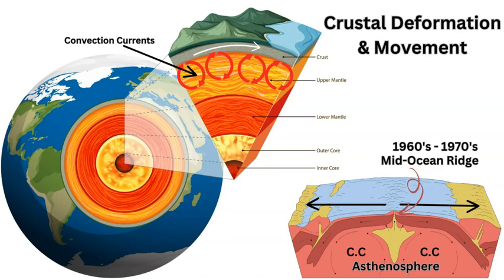What Dr. Wegener could not explain back in 1912 when he published his work and evidence was how these large landmasses actually drifted, how they actually moved. There were certain suggestions and ideas and theories but nothing concrete, nothing with evidence to convince all of the scientists who acknowledged the drift and acknowledged that Pangaea existed to accept how these large landmasses, these continents, were actually moving.